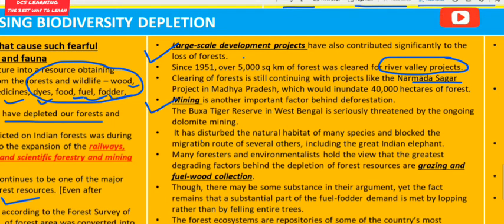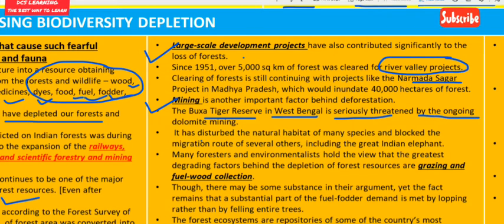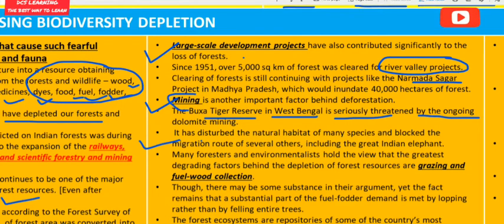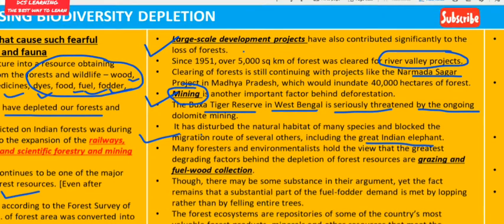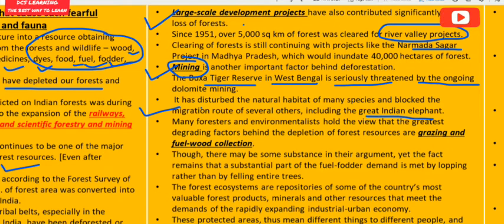Mining is another important factor behind deforestation. The Buxa Tiger Reserve in West Bengal is seriously threatened by ongoing dolomite mining, which has disturbed the natural habitat of many species and blocked the migration routes of several others, including the great Indian elephant.